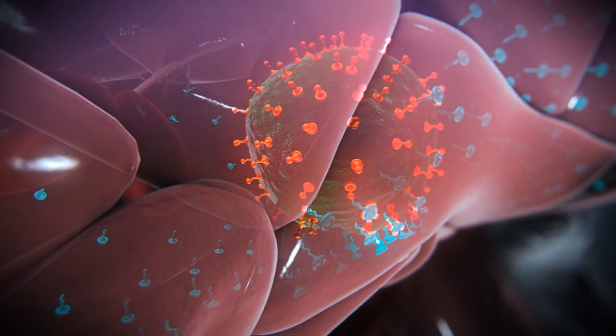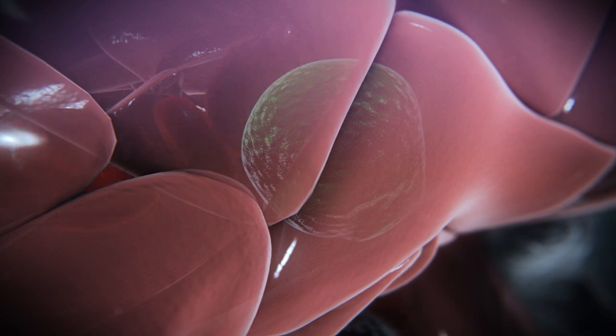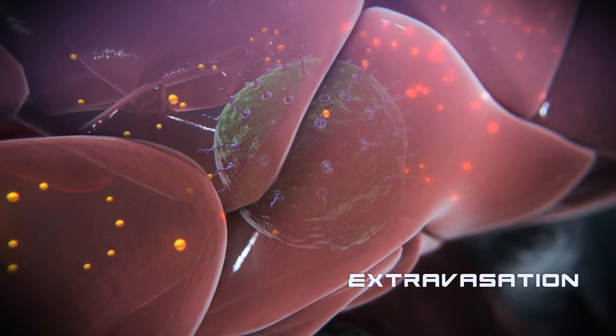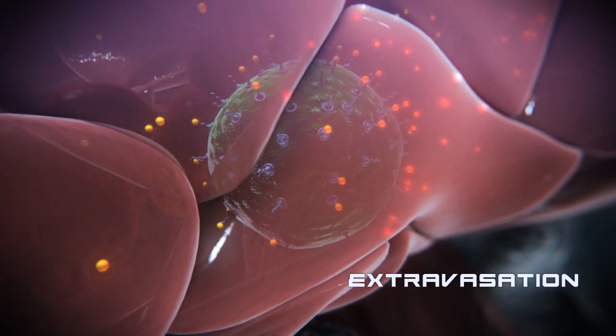The stem cell waits for an additional signal, which we think is a lipid that's present in the circulation. This binds to its cell surface receptor and causes a cell shape change.